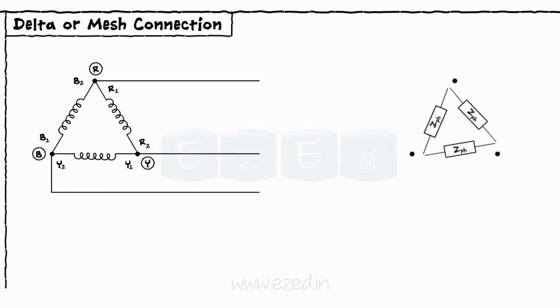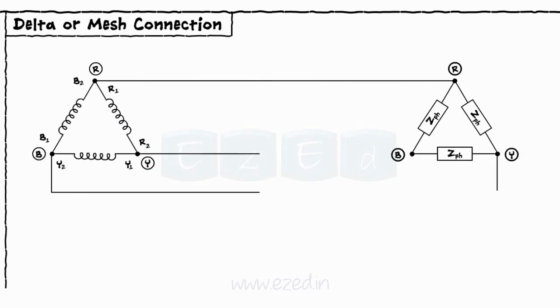When the loads having equal magnitude are connected to the delta connection, we get the delta connected balanced load system.